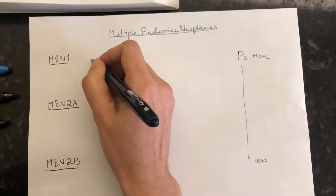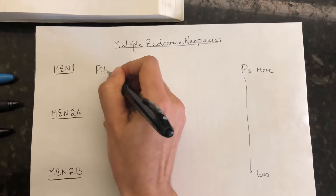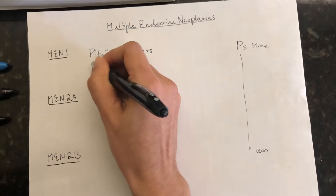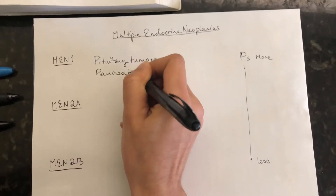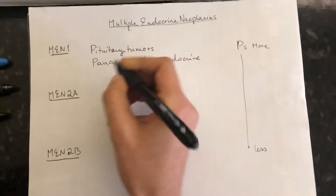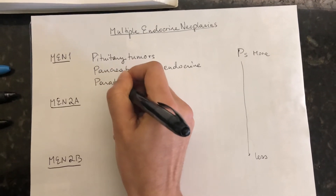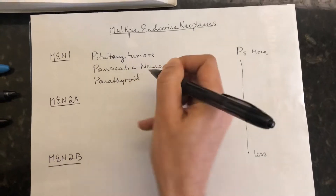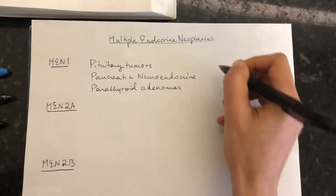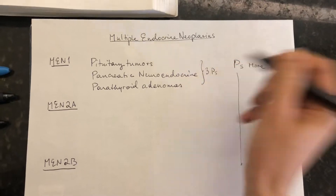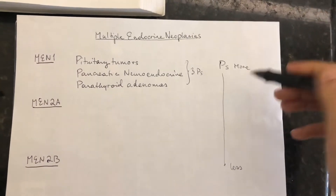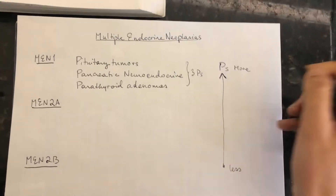So that means you're going to have the most P disorders at the top. For MEN 1, you're going to have your pituitary tumors, your pancreatic neuroendocrine tumors, and your parathyroid — so you have three P's here.